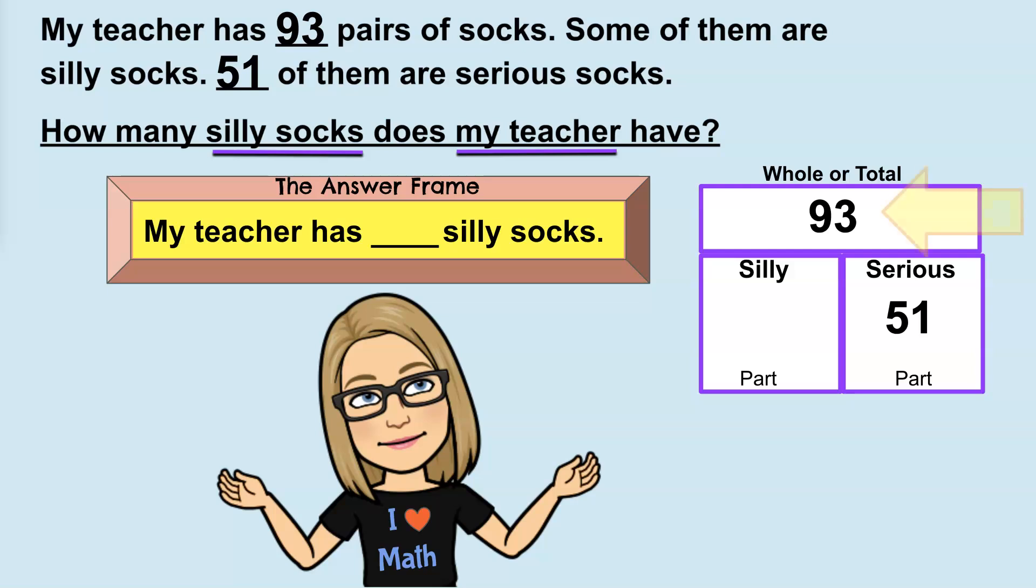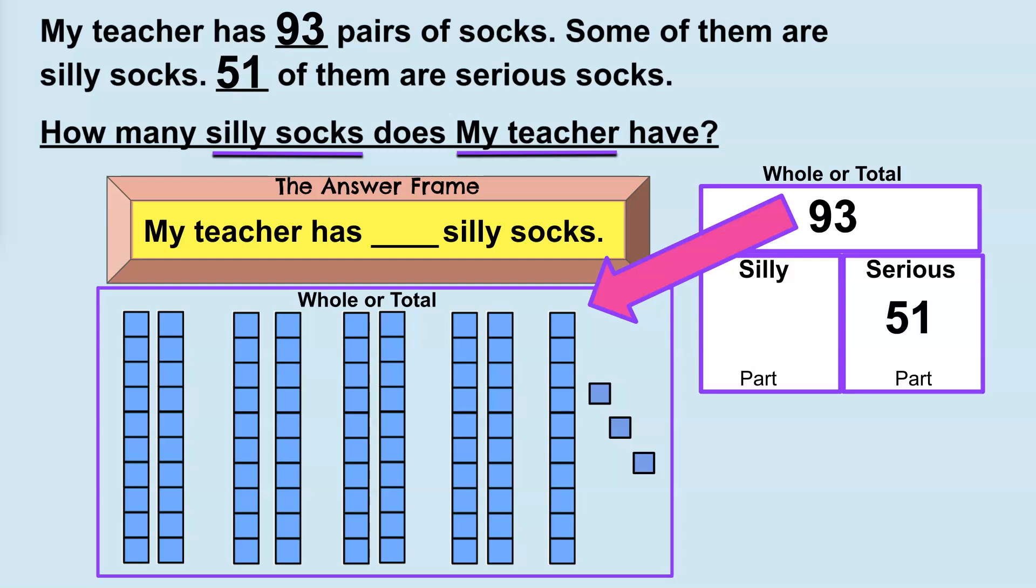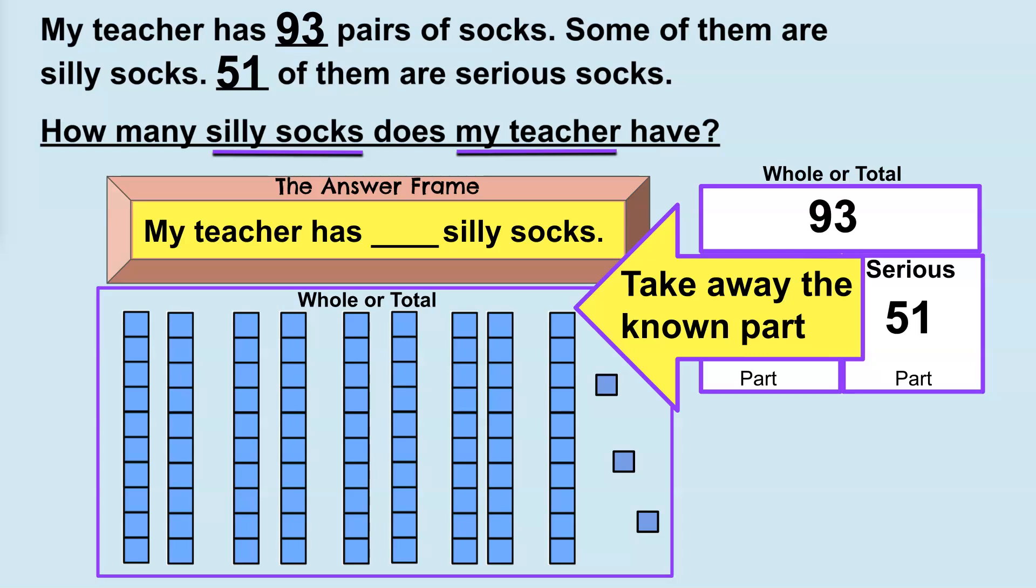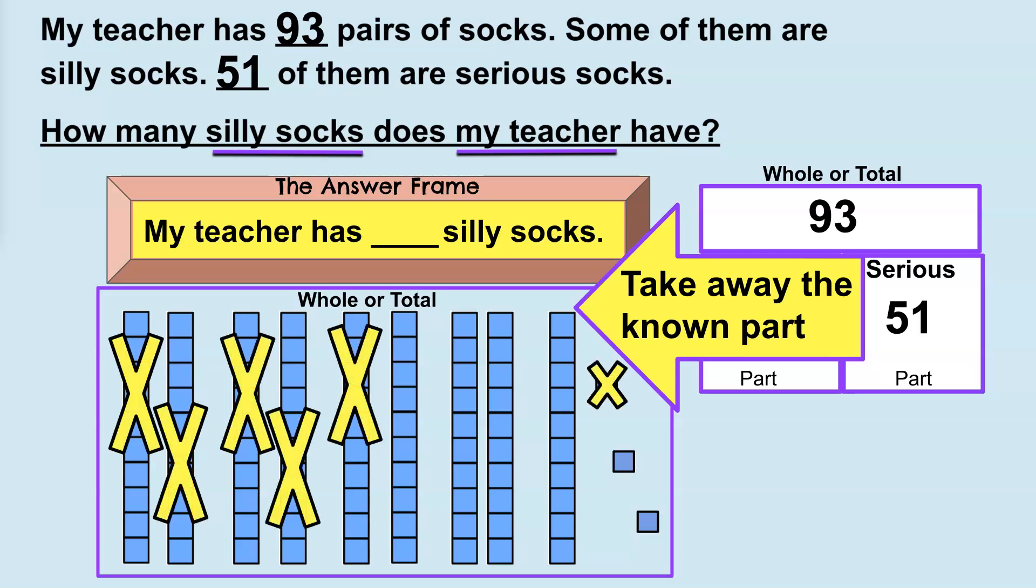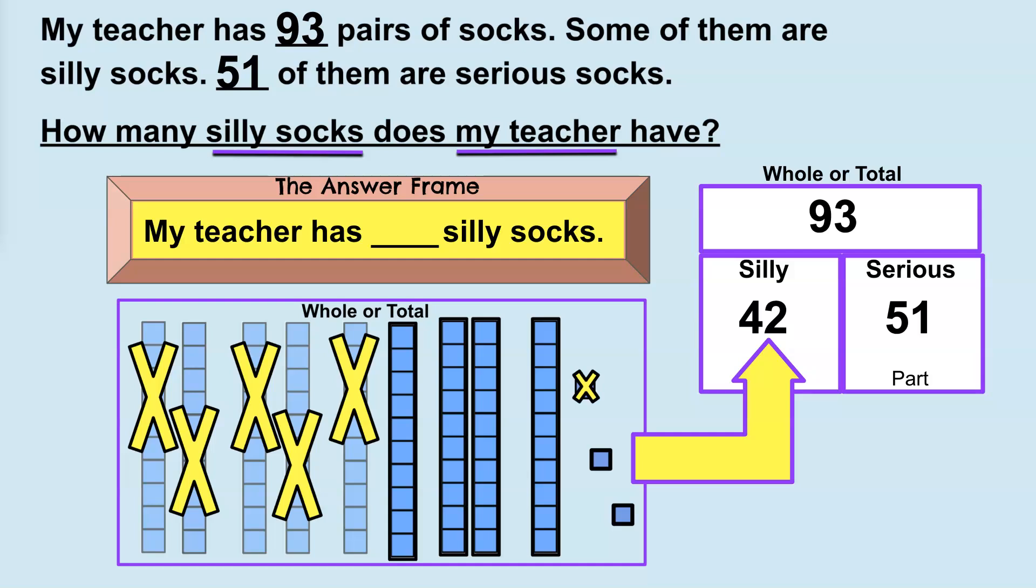If we know the whole and one of the parts, we must remove the known part from the whole or total to find the value of the unknown part. So, now we're ready to find that unknown part. There's a lot of different ways that we could do this. Often, you're asked to show it in more than one way to prove your answer. So, we're going to do base 10 blocks for our first way. So, I make a model of 93, my total, in base 10 blocks. So, I need to take away the known part from the total to find my missing part. So, I take away 51. And what remains is the other part. And that happens to be the silly socks. So, I see I have 4 groups of 10, 2 ones. I have 42 silly socks.